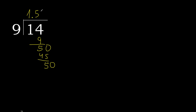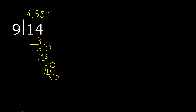50, 9 multiplied by 5 is 45. Subtract — this repeats. Therefore it repeats: 5 repeats.